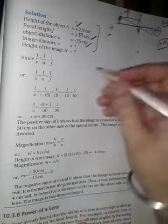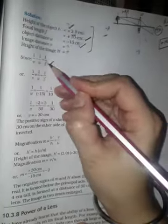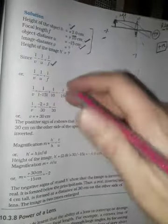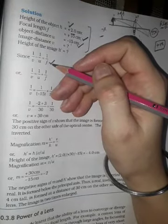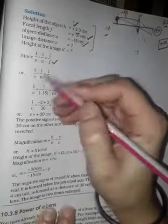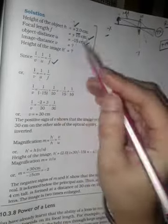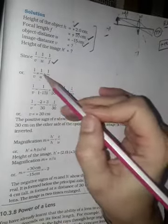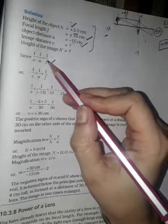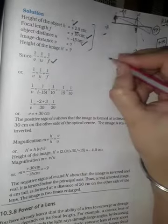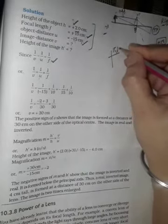Next, now we will use the lens formula: 1 over V minus 1 over U equals 1 over F. We will solve for V. We have to substitute U as minus 15 and F as 10.